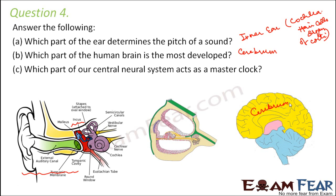Which part of our central nervous system acts as a master clock? The central nervous system is made up of the brain and spinal cord. The brain is the master clock because the spinal cord only handles reflex actions, whereas the brain controls everything happening inside our body.